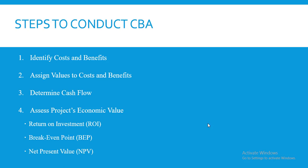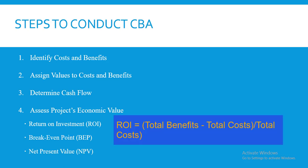Step four is assessing the project's economic value using specific metrics that help us decide whether it is worthy to proceed. One metric is return on investment (ROI), which assesses the gain you have gotten from the investment undertaken on the project, calculated as a percentage. The higher the return on investment, the more worthwhile the project.